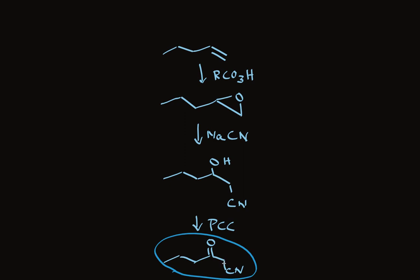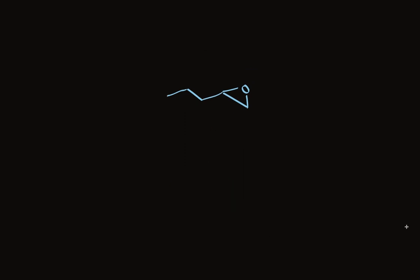Let's look at another example. Starting with the same epoxide, we now use acid-catalyzed ring opening to add the nucleophile to the more substituted carbon. If we use methanol and acid, we make a hydroxyether. And, as before, one of the things we might think of doing with this compound is oxidizing it.